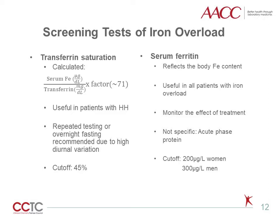Compared with ferritin, transferrin saturation is a more sensitive test for hereditary hemochromatosis. However, since serum iron shows diurnal variation and its concentration is affected by recent dietary intake, repeated testing or overnight fasting is often recommended. On the other hand, serum ferritin reflects tissue iron storage and body iron content, so it identifies clinically significant iron overload in all patients. In addition, it is a useful test to monitor the effect of iron overload treatment. The disadvantage of ferritin is that it is not a specific indicator of iron. Because ferritin is an acute phase protein, its concentration increases with inflammation as well as liver diseases. As a result, if ferritin level is high but transferrin saturation is normal or low, the first thing physicians should consider is to rule out inflammation and alcohol abuse.